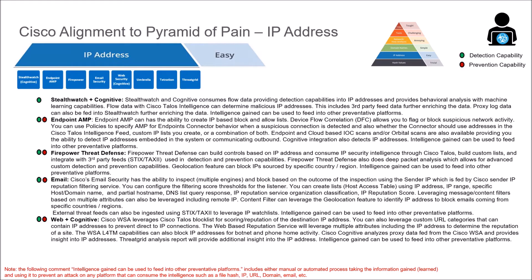Stealthwatch takes flow data, observes the network, and we can pull IP addresses out. It also provides behavioral analysis and machine learning capabilities. Cisco Talos also provides intelligence so we can determine malicious IP addresses. This includes third-party feed data and proxy log data, further enriching the data ingested within Stealthwatch. Intelligence gained here — when we see flow data talking to a suspicious IP address — we can take that information and move it into prevention capabilities. Stealthwatch is a detection capability.